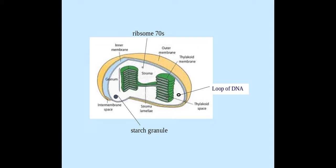The theory is that mitochondria and chloroplasts originated from prokaryotes in the endosymbiotic theory, if you wanted to look at that. It also has its own loop of DNA to code for proteins, for things like enzymes that have a role within photosynthesis.